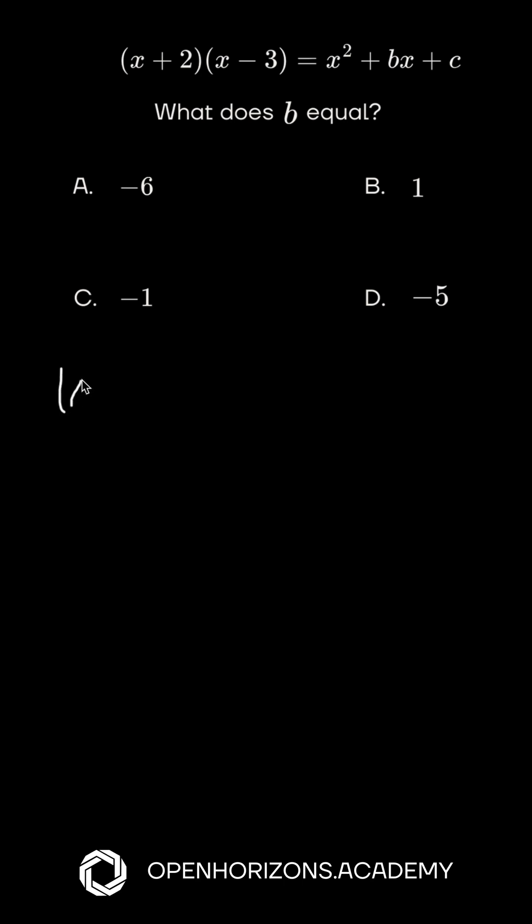We'll start solving this question. It's good practice to rewrite the question just to make sure you've got all the details right. So we've got x plus 2 times x minus 3. We're trying to convert this into a quadratic.